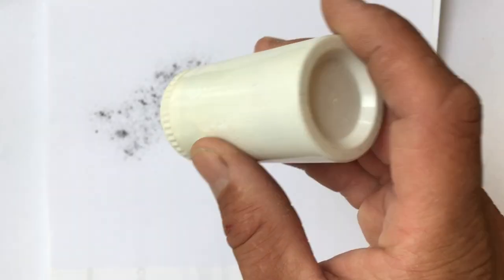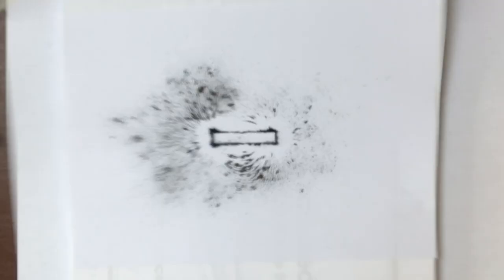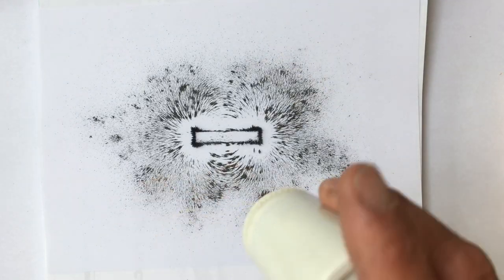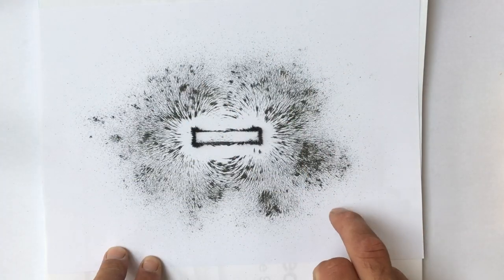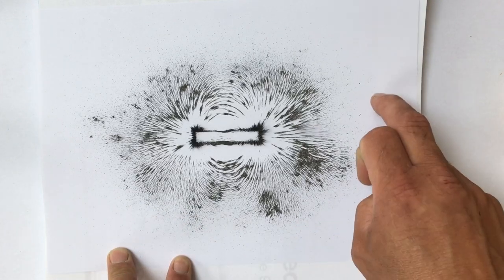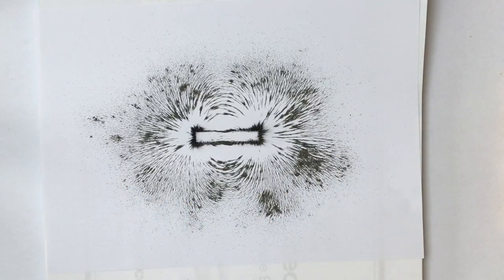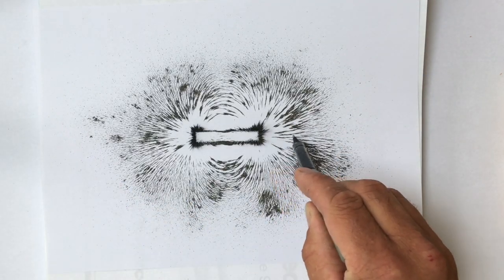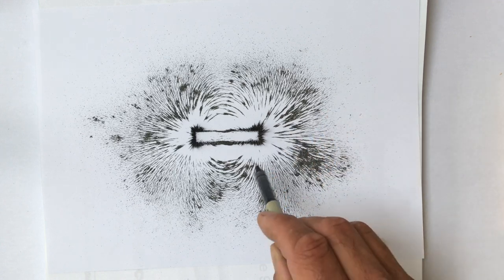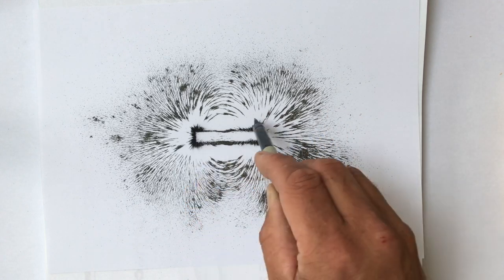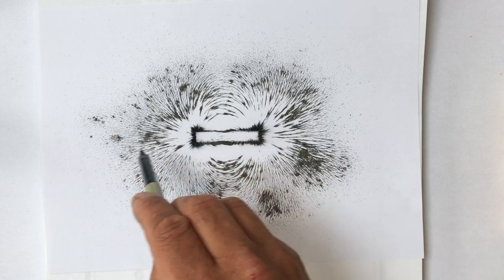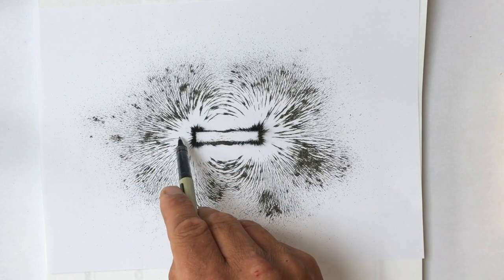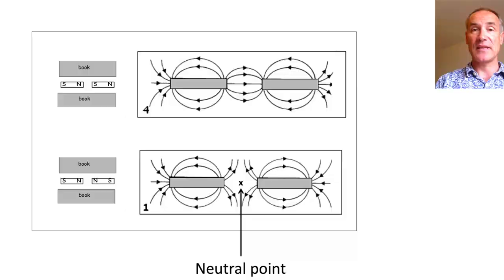Putting the magnet between the books and then putting a piece of paper over and start sprinkling with iron filings, you'll start to see the magnetic field pattern revealed as the iron filings line up along the field lines of the magnet. Tapping the paper also helps. You'll notice the field lines spread away from each other — they come out of one pole and into the other. You'll also notice the field is strongest at the poles where the magnetic field lines are closest together.